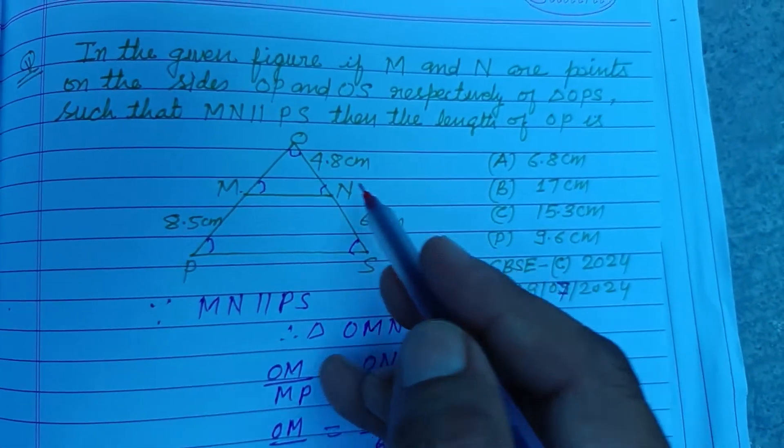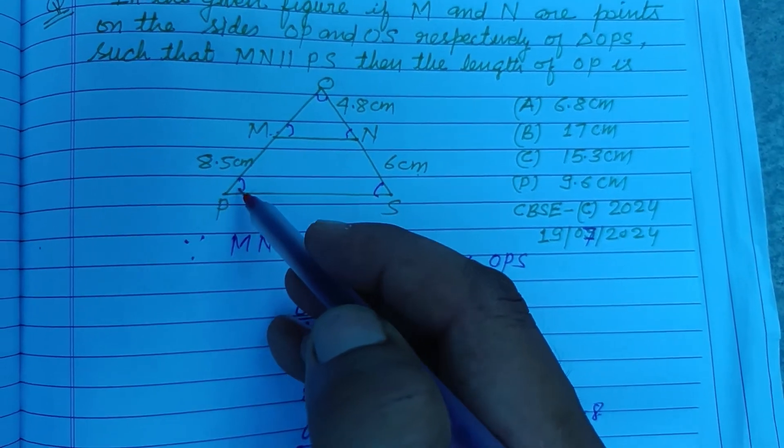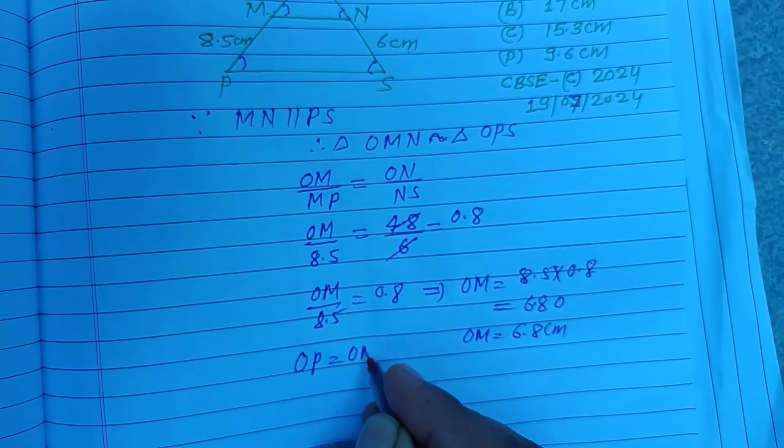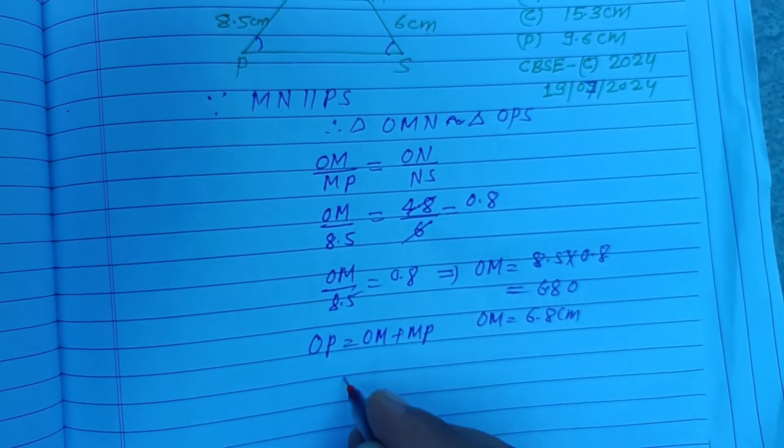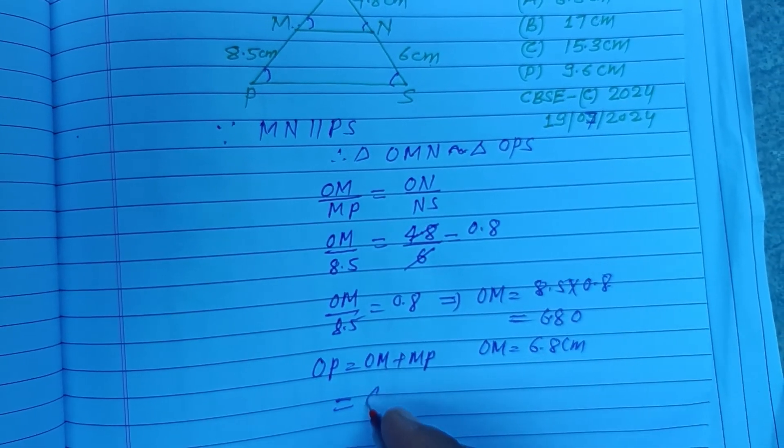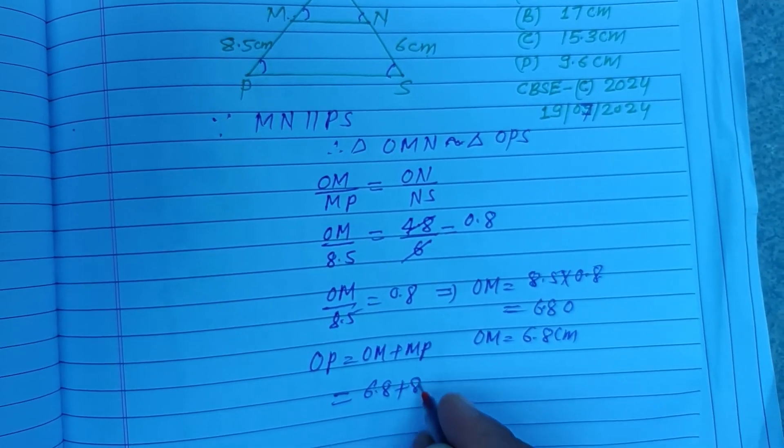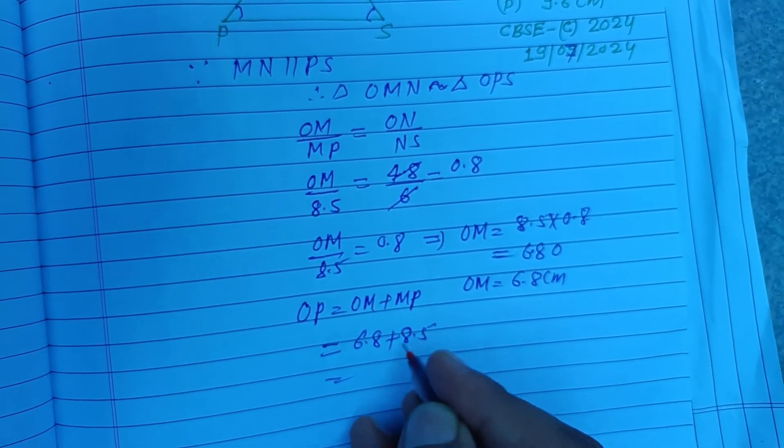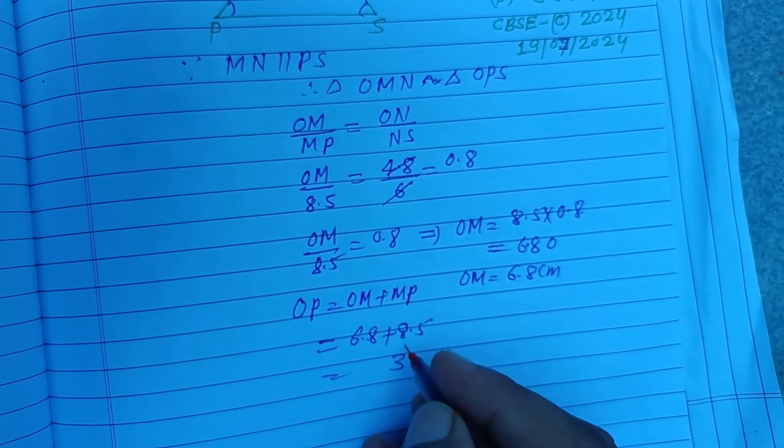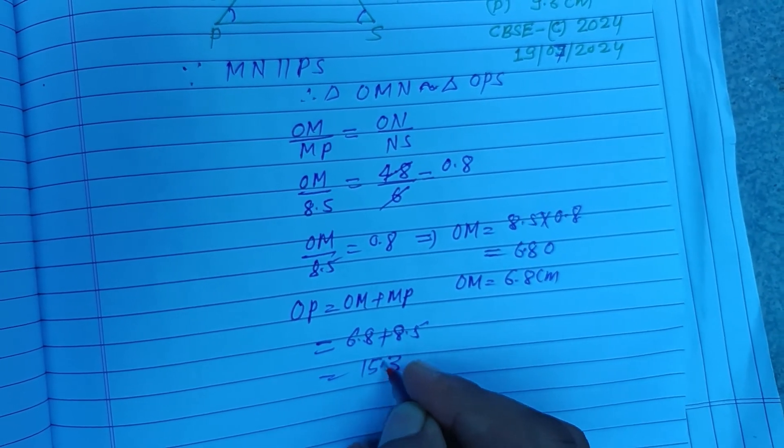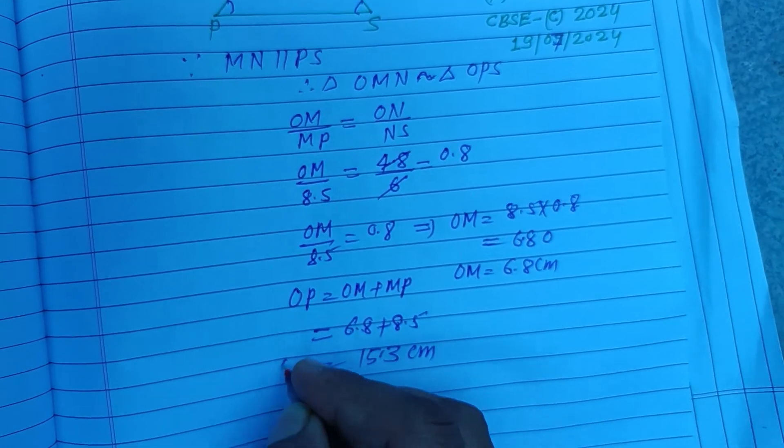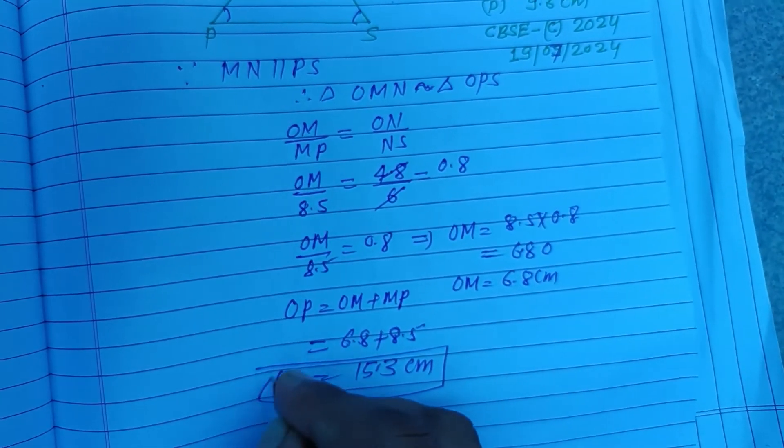OP is the sum of OM plus MP. So that is 6.8 plus 8.5, which equals 15.3 centimeters. This is the length of OP in this question.